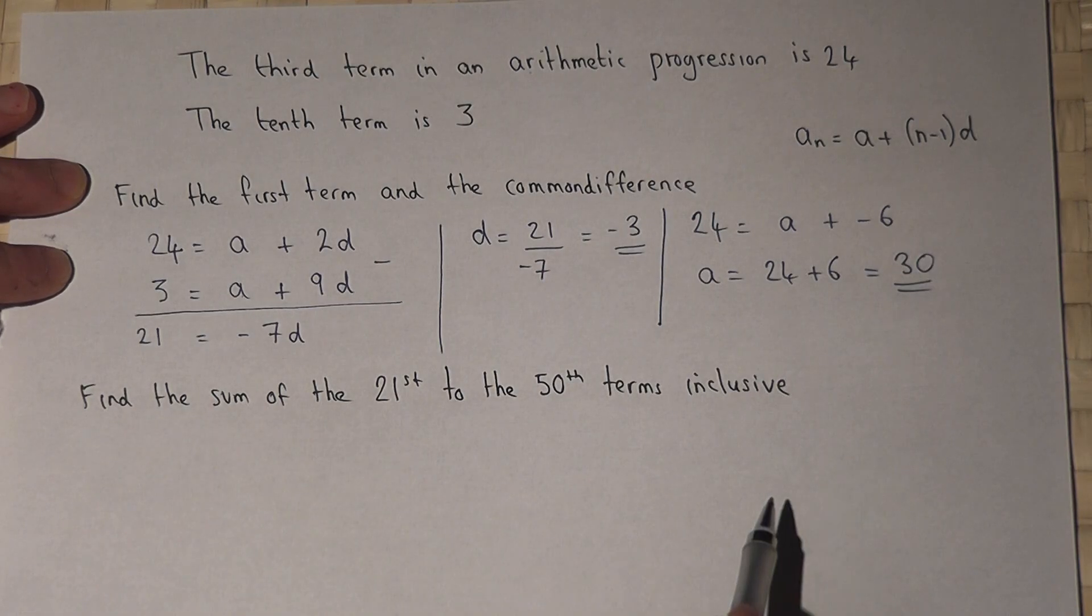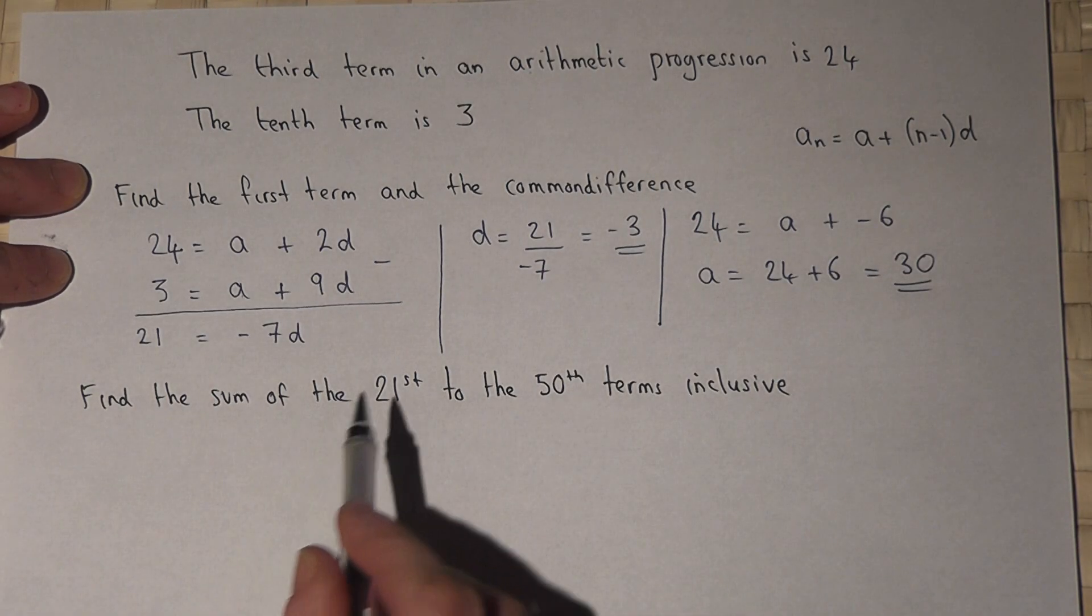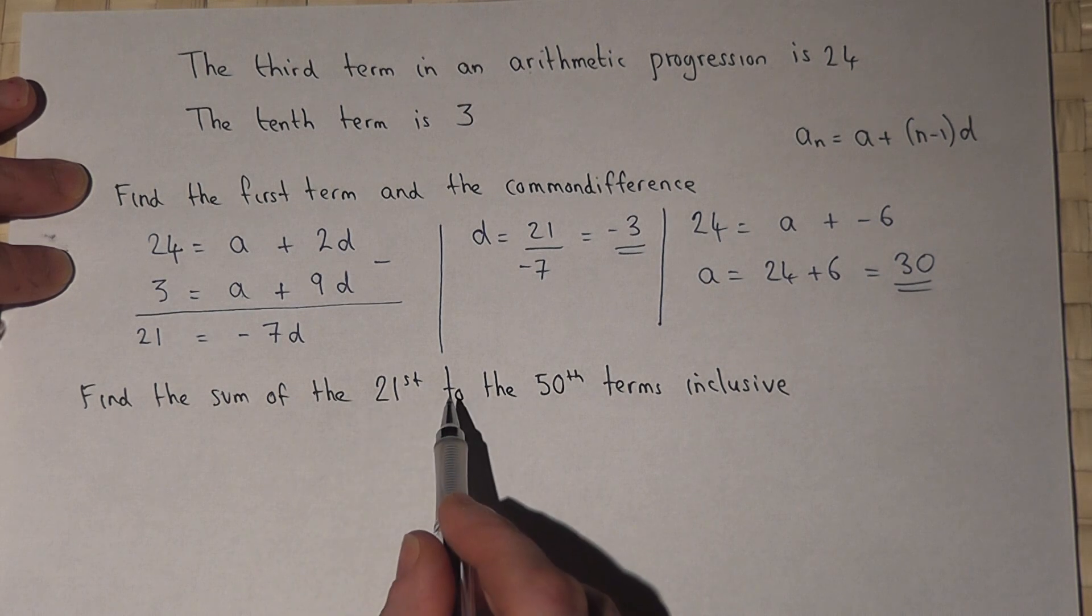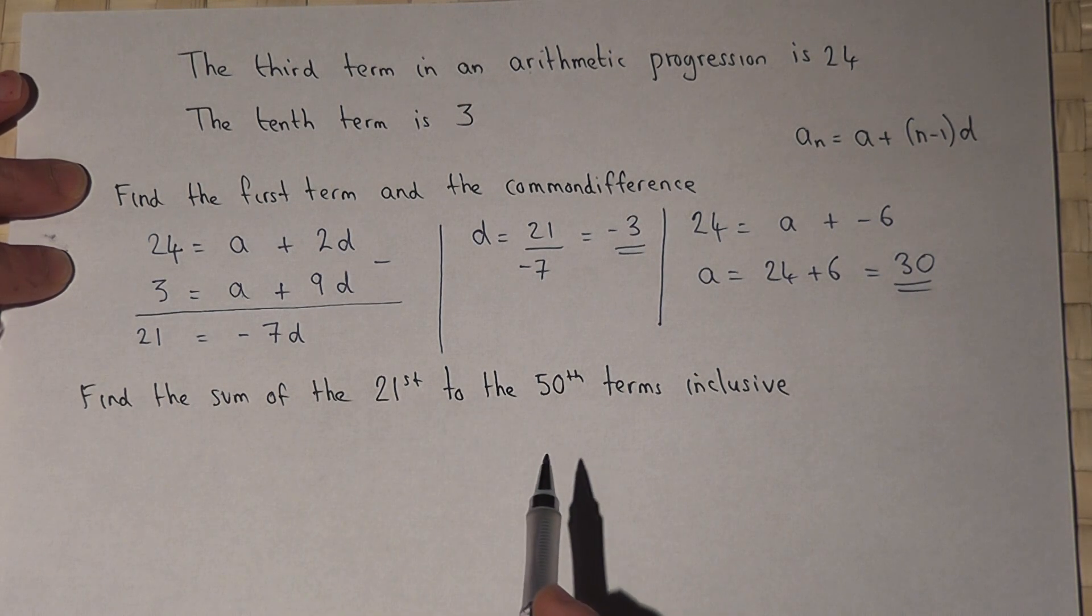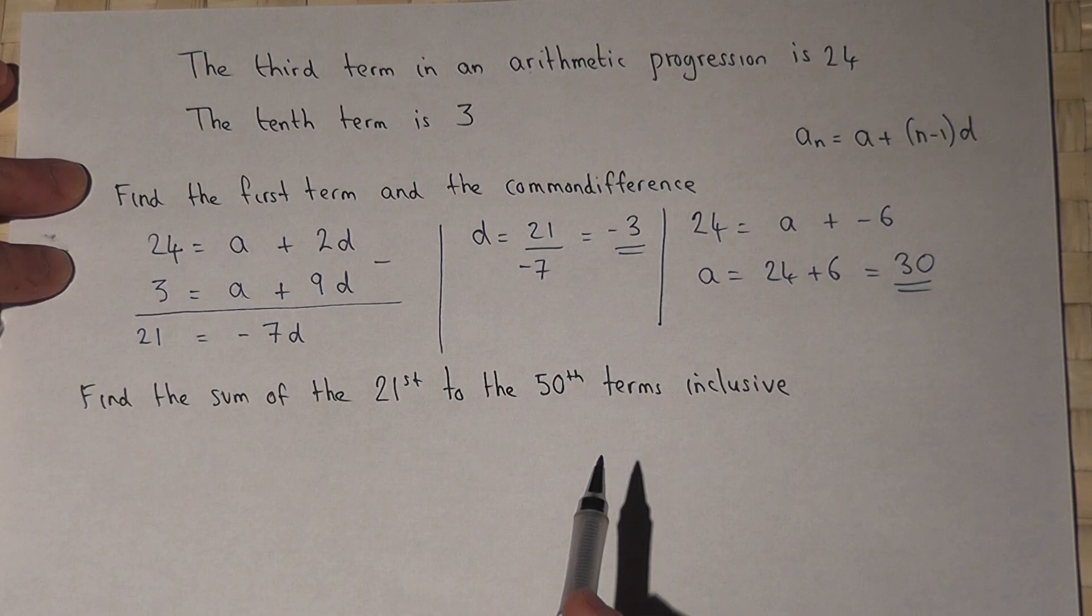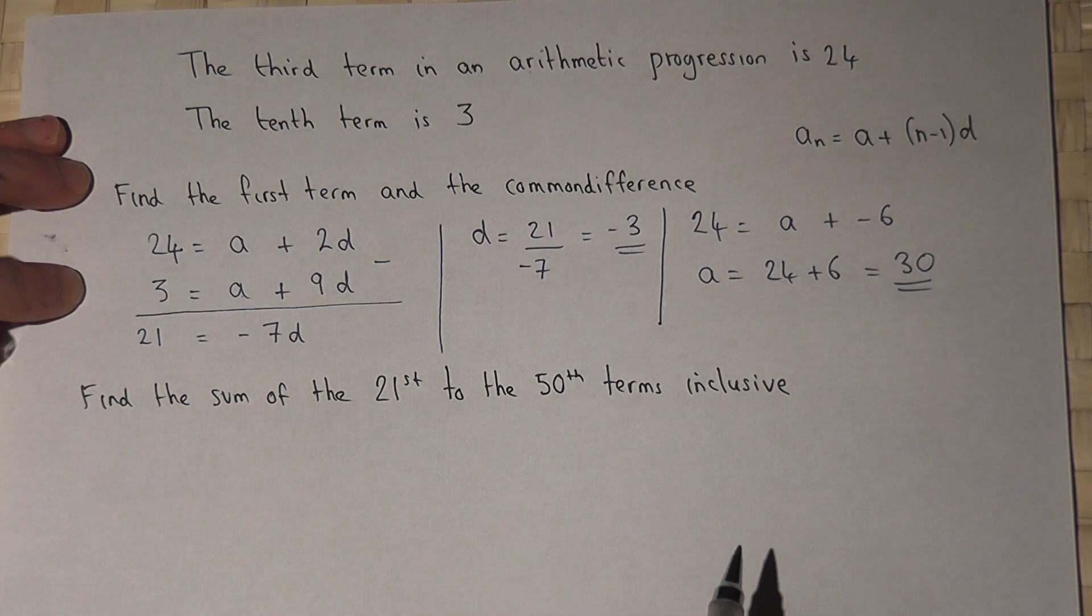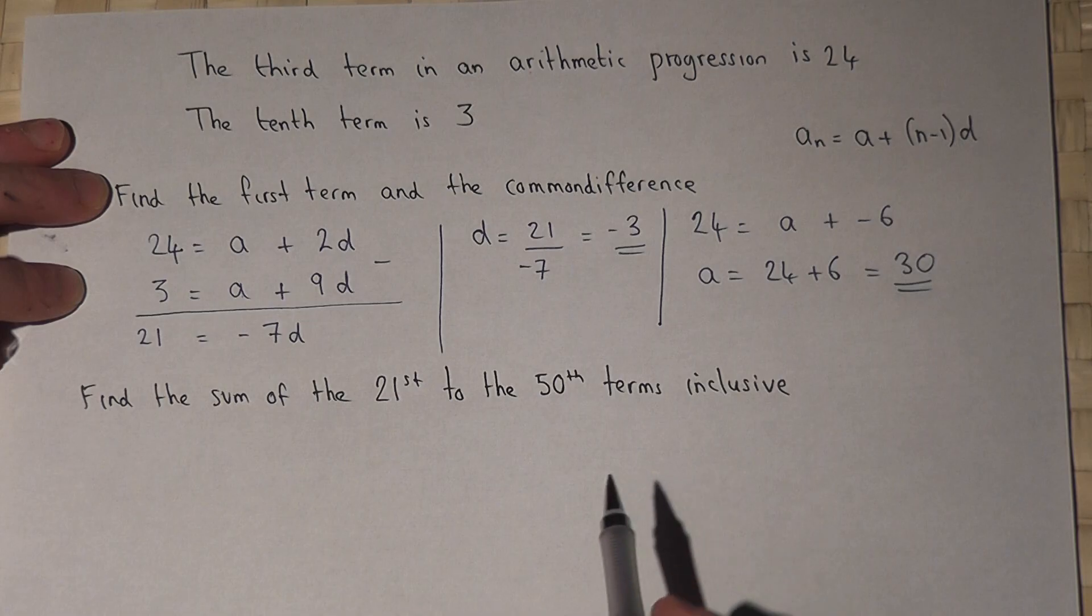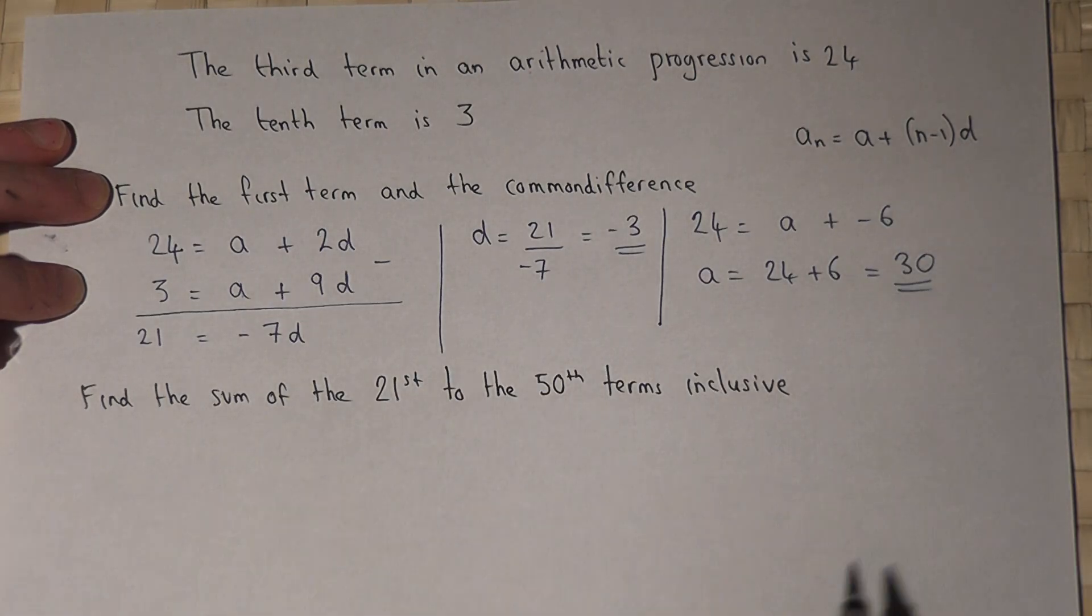In the second part, we're asked to find the sum of the 21st to the 50th term inclusive. Now there are different ways to do this, but one way is to use the fact that the sum of a given number of terms in an arithmetic progression is